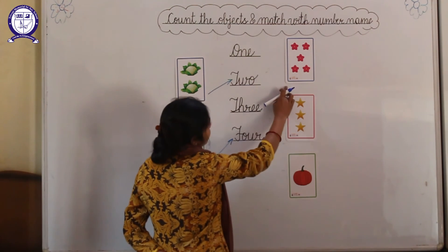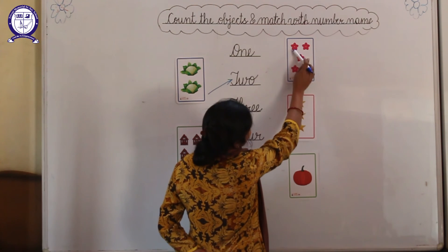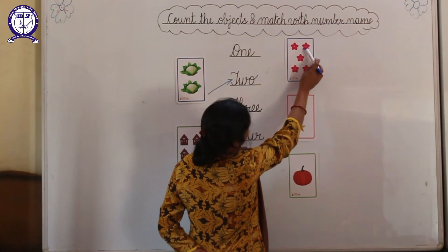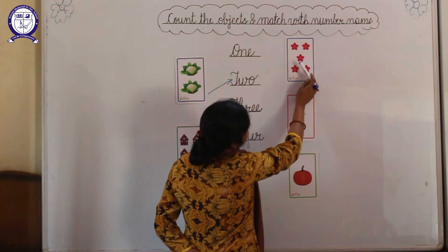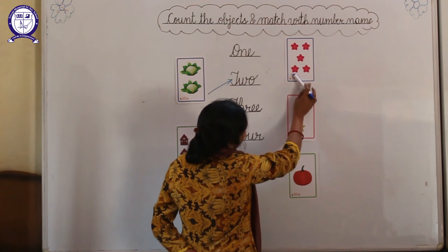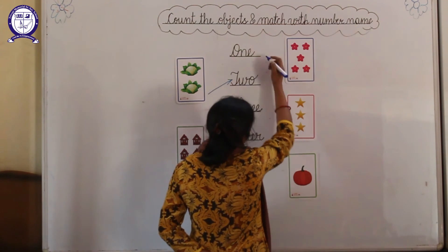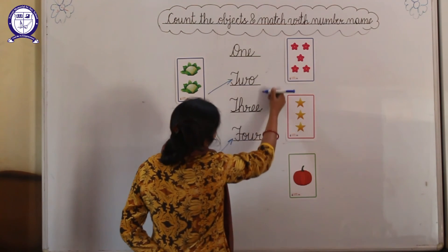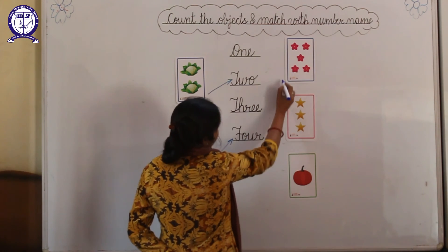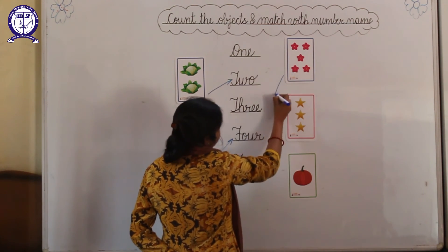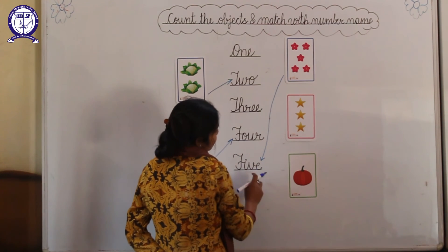And next beta, how many flowers are there? 1, 2, 3, 4, 5. And where is the spelling of 5? Here. And match with the spelling of 5.